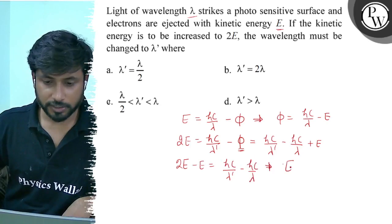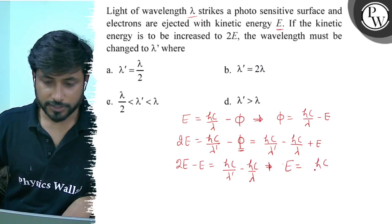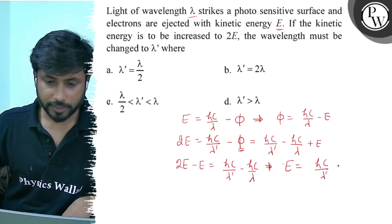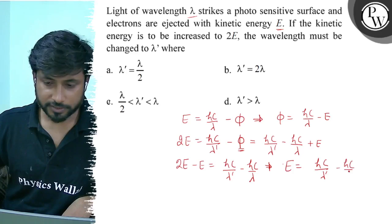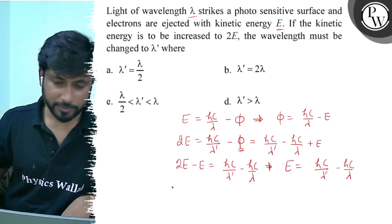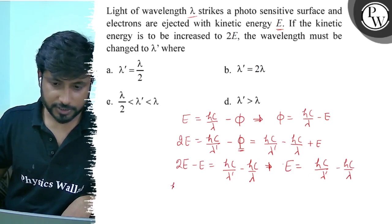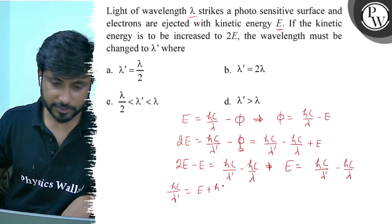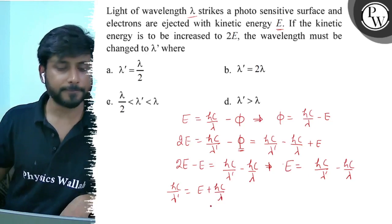So this simplifies to E equals hc by lambda dash minus hc by lambda. Therefore, hc by lambda dash equals E plus hc by lambda.